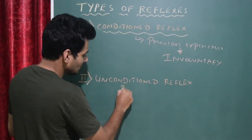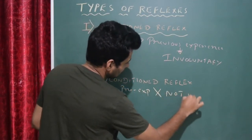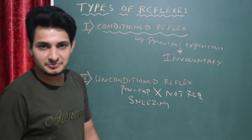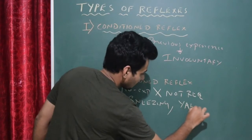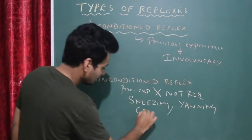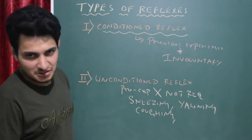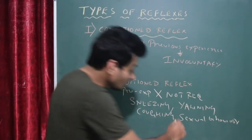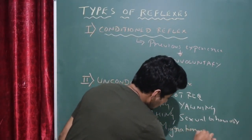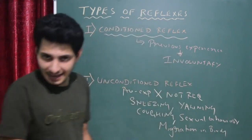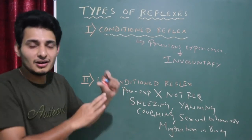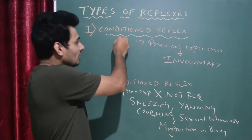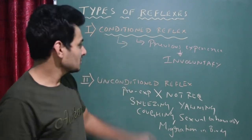Unconditioned reflex is exactly opposite. Previous experience is not required. For example, sneezing, yawning, huffing, sexual behavior for the opposite partner, or migration in birds — all these activities occur without any previous experience. They are not based on prior learning.